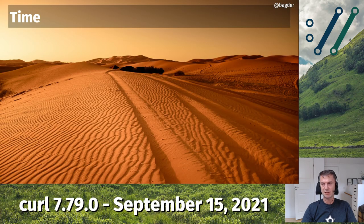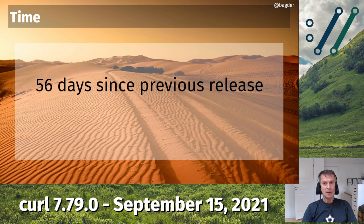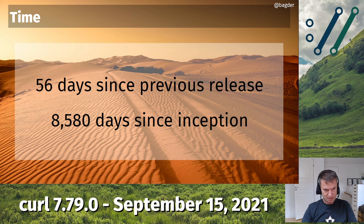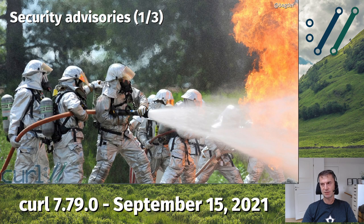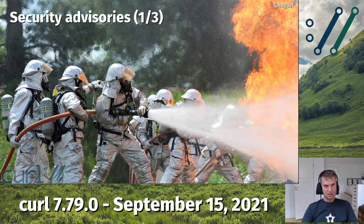We're at 56 days since the previous release - that's the ideal release cycle of eight weeks. We're at 8,580 days since we created curl with the first release. Those are just numbers, but let's get into something slightly more serious.